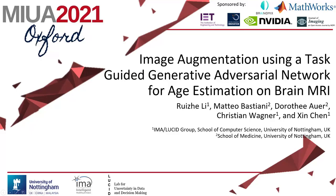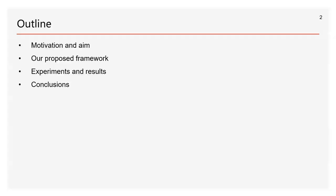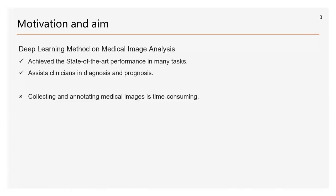The title of my paper is 'Image Augmentation using a Task-Guided Generative Adversarial Network for Age Estimation on Brain MRI.' In this video, firstly I will show our motivation and aim, then introduce our proposed framework. Next, I will talk about some experiments and results. Finally, I will give some conclusions.